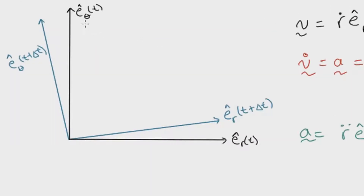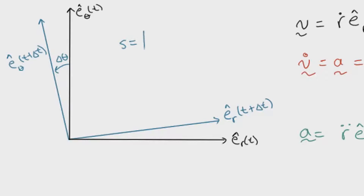In this diagram, we can see e_theta as a unit vector in its initial state. Some time later, that unit vector rotates as the particle moves along its path and points in a different direction. This depends on how delta theta changes over time. We can define an arc length here: arc length equals the radius times the angle delta theta. Since unit vectors always have magnitude 1, the radius is always 1.